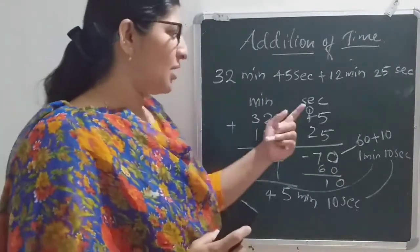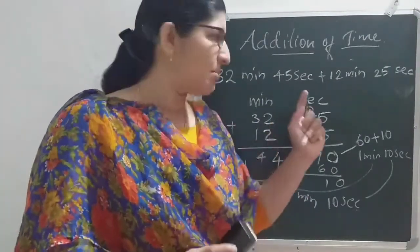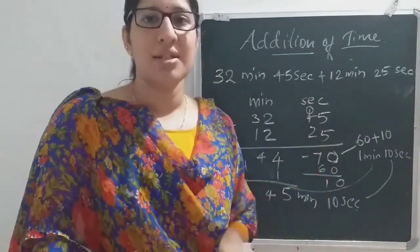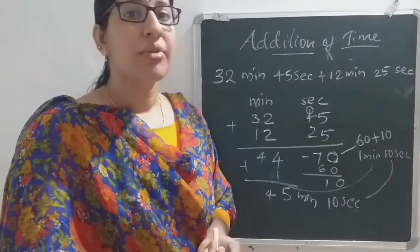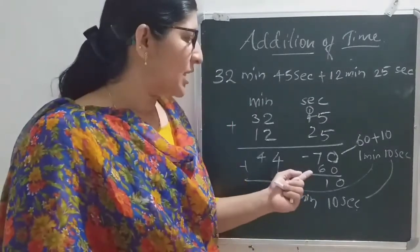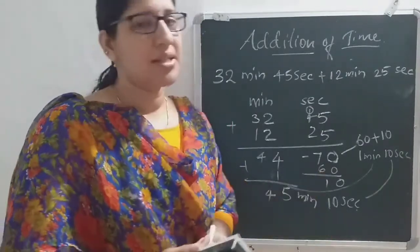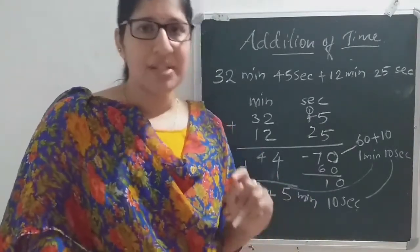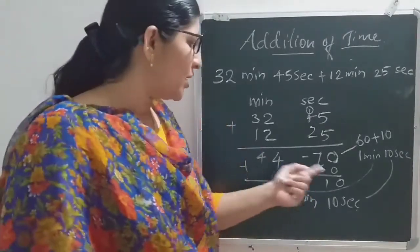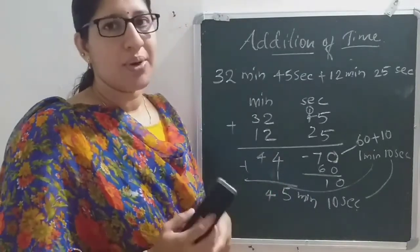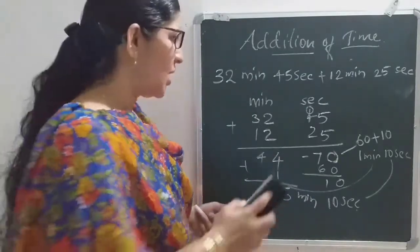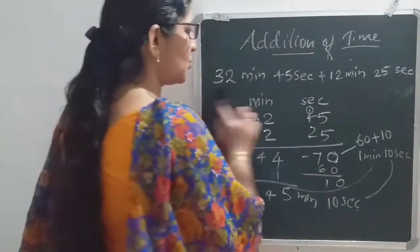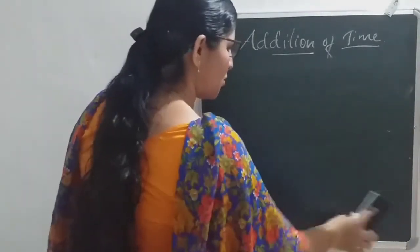Very easy — but only one thing you should keep in mind: whenever minutes or seconds in the second part are greater than 60, you need to regroup it. Make it less than 60 by subtracting 60. 60 minutes means 1 hour; 60 seconds means 1 minute. That one you have to add with the hours or minutes. If the answer is less than 60, no problem — nothing you need to do.